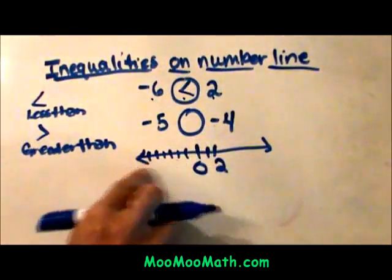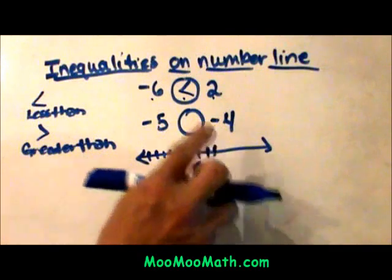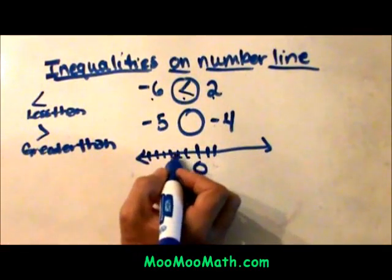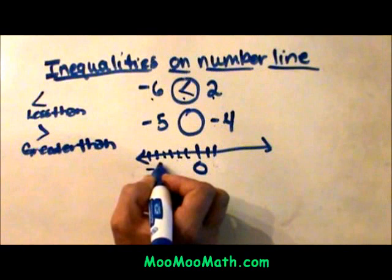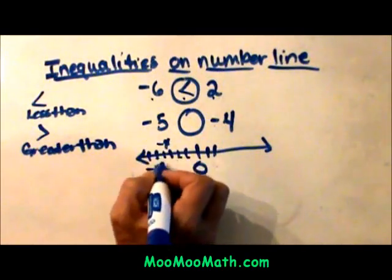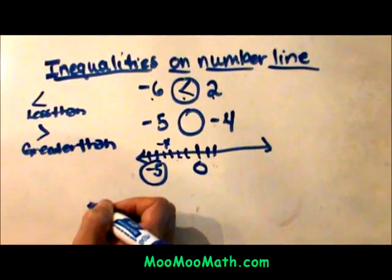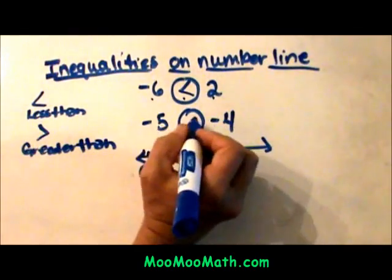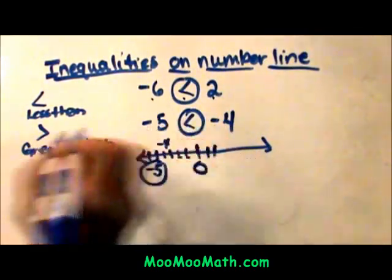Now let's look at two negative numbers. This is where it gets a bit confusing. 1, 2, 3, 4, 5. There is negative 5, so here is negative 4. Now the left most number is negative 5, so once again we have negative 5 is less than negative 4.